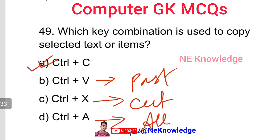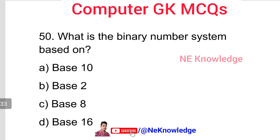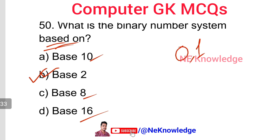Question number 50: What is a binary number system? In a computer, the binary number system uses digits 0 and 1. Binary is base 2. Decimal is base 10, and hexadecimal is base 16.